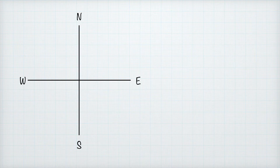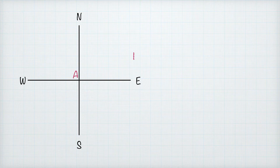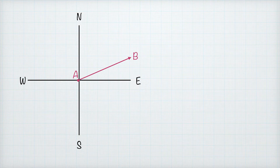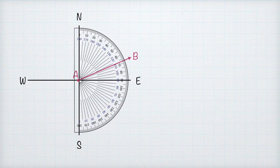There's a much more accurate way of giving direction, and that's bearing. Bearing is also giving direction but we do it differently. Let's look at the same example again and see how we use bearing. Instead of giving direction using the 16 cardinal points, we're going to make use of degrees, measured with a protractor.